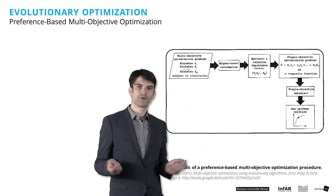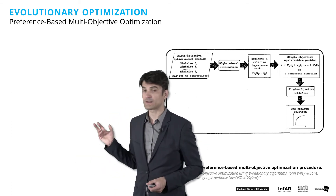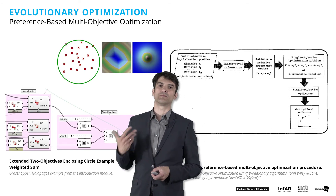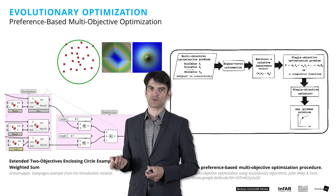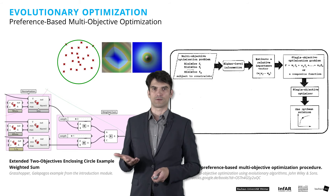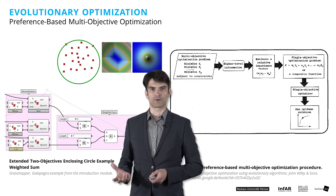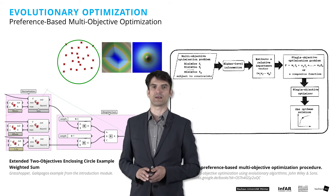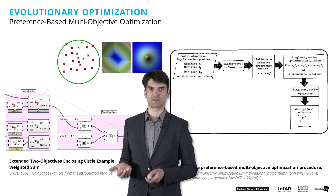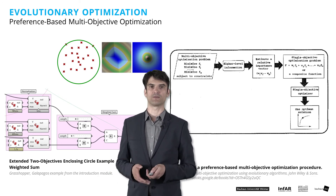I've shown here on the other hand side the implementation in Grasshopper, which we will consider after this lesson. We will look into the example using Grasshopper and creating a preference-based multi-objective function.